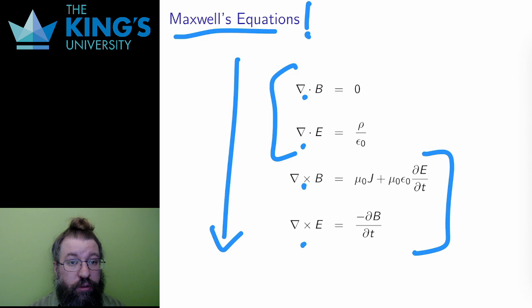Without fields, curl, divergence, these differential equations are just impossible to state. Therefore, the concepts of vector fields, of curl and divergence, needed to be invented in order to be able to state the fundamental equations that govern electricity and magnetism.